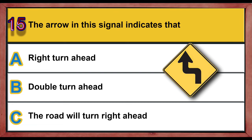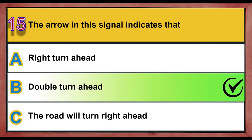Question 15. The arrow in this signal indicates that: A. Right turn ahead. B. Double turn ahead. C. The road will turn right ahead. Correct answer is B: Double turn ahead.